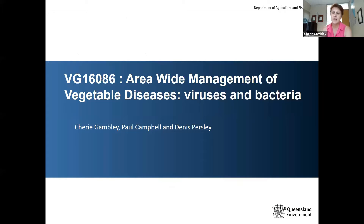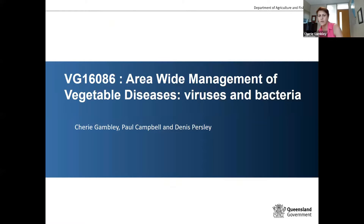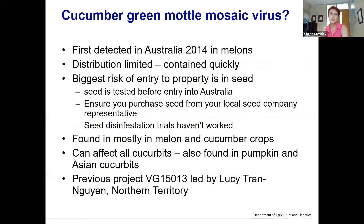I'm Cherie Gambley and I work for the Department of Agriculture and Fisheries in Queensland. We have a national project for viruses of vegetables, which this presentation is part of. Today I'm talking about cucumber green mottle mosaic virus — we all call it CGMMV for obvious reasons.